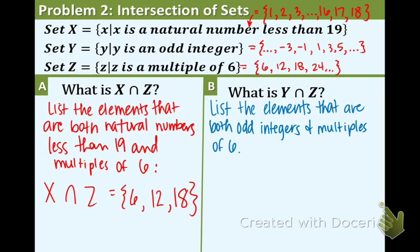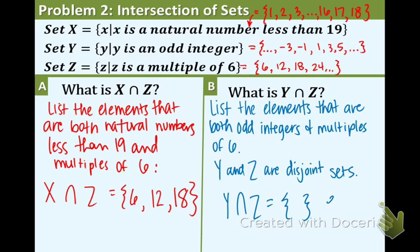And what happens when we try to do the intersection of two disjoint sets? The intersection is the empty set. Okay, that's it for this problem.